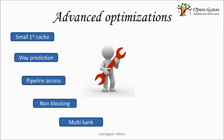There are different advanced optimization mechanisms for memory designers: smallest first cache, way prediction, pipeline access, non-blocking caches, and multi-bank caches. The first — smallest first cache — follows the KISS principle: Keep It Simple Silly. If a cache is small and simple, it is easier to determine a hit or miss. That is why the smallest first cache is used. If there is a hit, the time needed to fetch data is reduced. If there is a miss, we find out sooner.